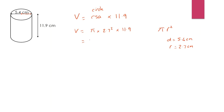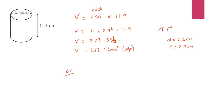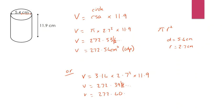Rounding to two decimal places — using the 6 for rounding, which rounds the 3 up to a 4 — gives 272.54 centimetres cubed. You may use 3.14 instead of π: that gives 272.398, which rounds to 272.40 centimetres cubed. As you can see, using either version they're very close together, and either answer will give you full marks in an exam.